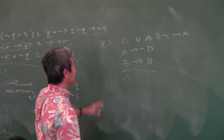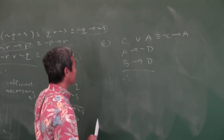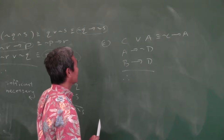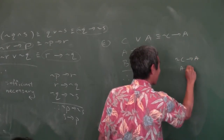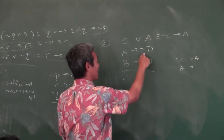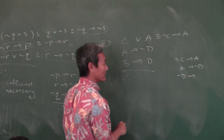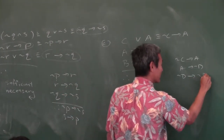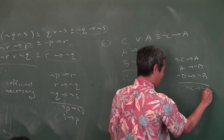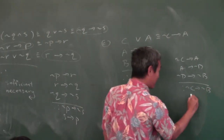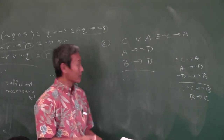Which one do I start with? I see only one B and one C. So either start with B or C. Let's start with C: NOT C implies A. Then A implies NOT B. Then the contrapositive of the last line: NOT B implies NOT D. Wait — therefore NOT C implies NOT D. What if somebody wrote B implies C? Yes, because that's the contrapositive — the contrapositive is equivalent to the conditional.